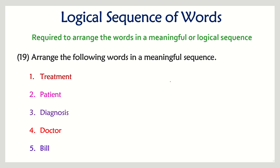Next question: treatment, patient, diagnosis, doctor, and bill. Once a person falls ill, we call them a patient. The patient goes to a doctor, and the doctor does a diagnosis. After diagnosis comes treatment, and after treatment the patient receives a bill. That is the correct sequence.